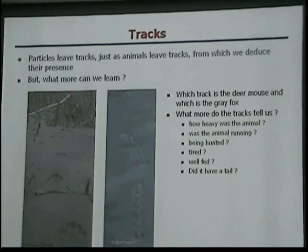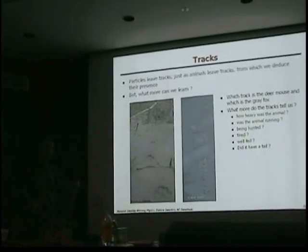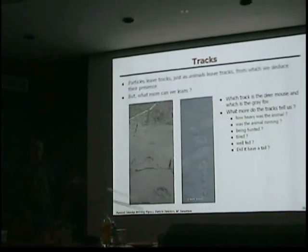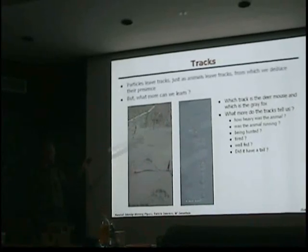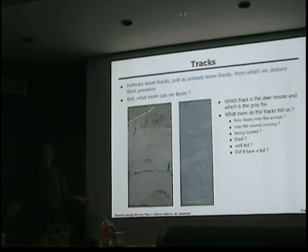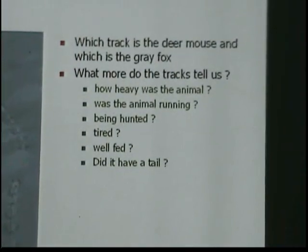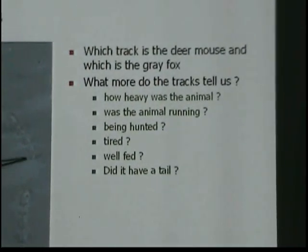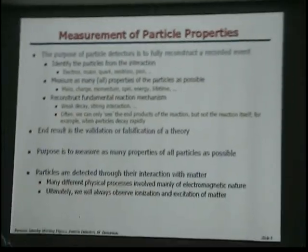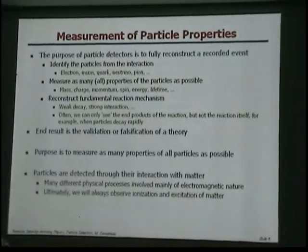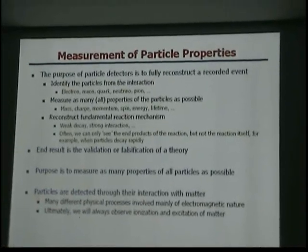But of course there's much more you can tell. If you see tracks in your backyard, you should be able to distinguish between a rabbit and a raccoon. From the footprints you may be able to tell what animal it was, deduce how heavy it was, whether it was running or tired, or even if the animal had a tail. That's the definition I prefer.